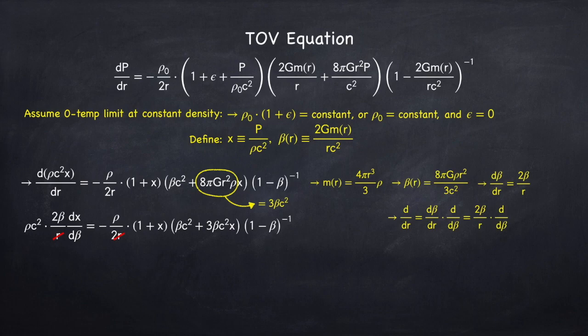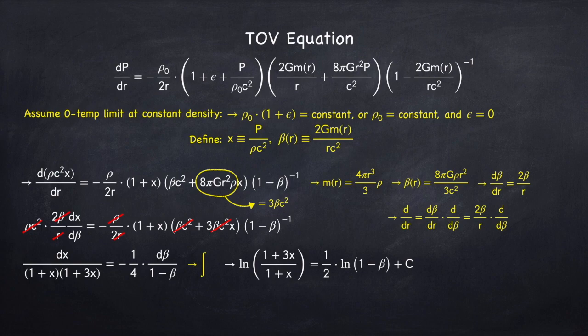And a bunch of things are going to cancel. First, these r's on the bottom cancel. Then I have a factor of rho c squared times beta on both sides. So they cancel. And I can rearrange this to put all the x terms on one side and all the beta terms on the other.